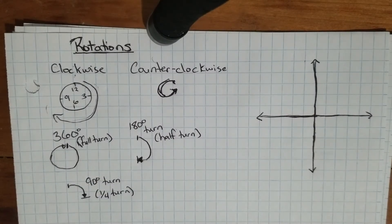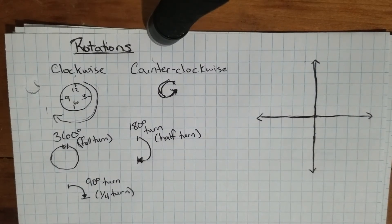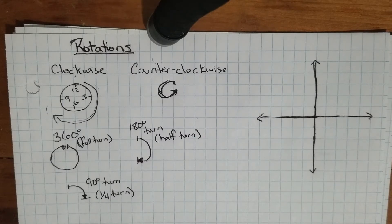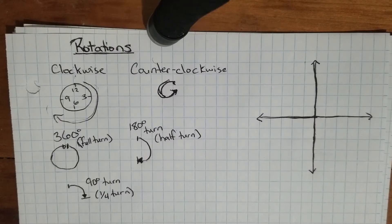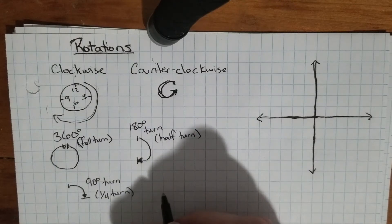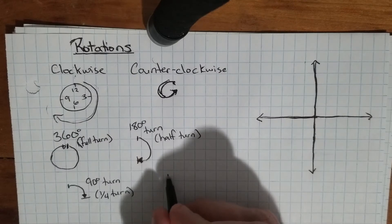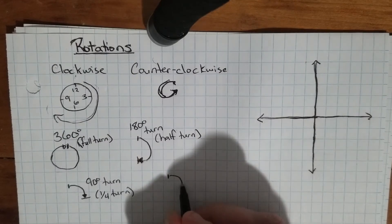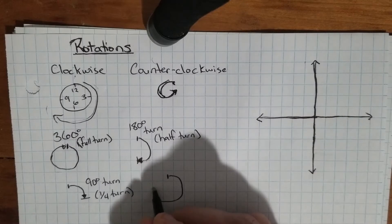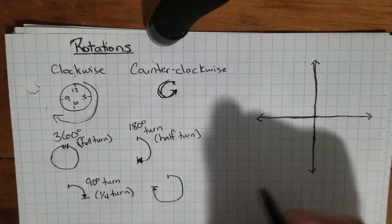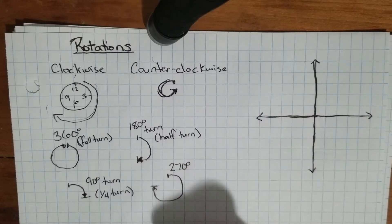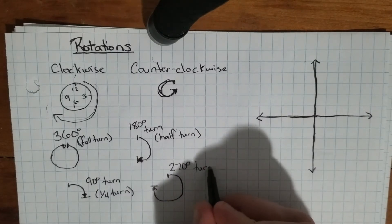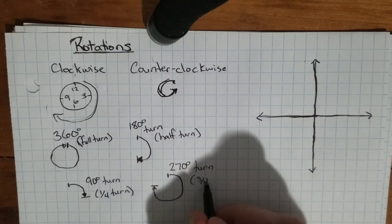When you get to high school, you're going to learn about all different types of rotations, but these are going to be the three we are dealing with. We will also talk about a fourth one, but in a way that really means there are only three. That fourth is a three-quarter turn: if you start here and go around, passing halfway and ending off right here, you would have a 270-degree turn — three quarters of the way around a circle.